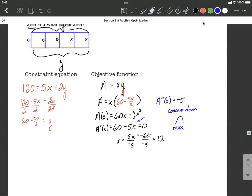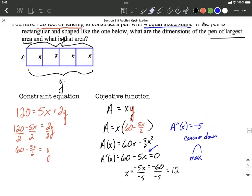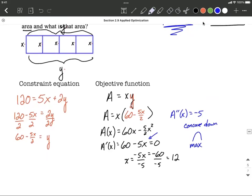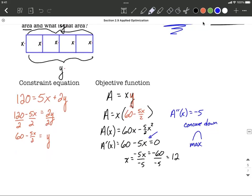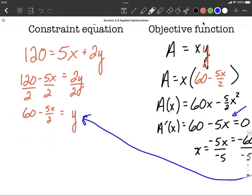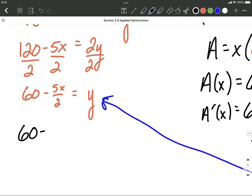So x is one of our dimensions. Remember, we are looking for the dimensions of the largest pen. And what's the area? So one of our dimensions, it's going to be 12 going up and down. We need to find a y value that goes along with this. So I'm going to take that 12 we got for x, and I'm going to go back here to our equation that has y on the other side all by itself. So I'm going to replace that in and say 60 minus 5 times 12 divided by 2 is going to be our y value.